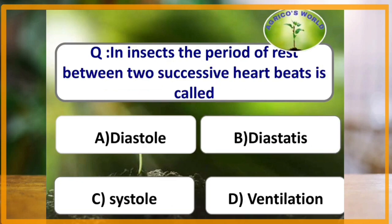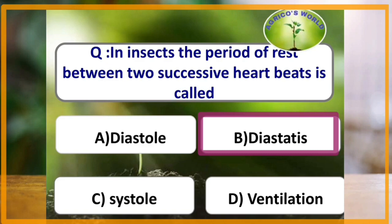Thickened area made up of columnar cells in blastoderm is germ band. In insects, the period of rest between two successive heartbeats is called diastasis, whereas the contraction phase of the heartbeat is systole and relaxation phase is diastole. Systole and diastole together constitute a heartbeat.